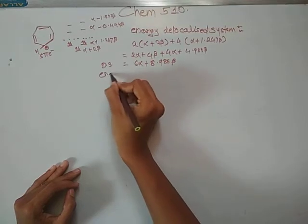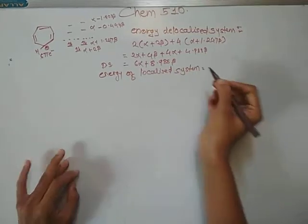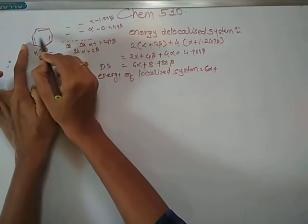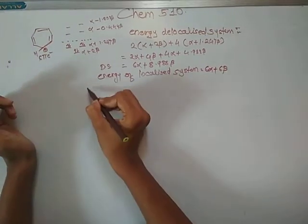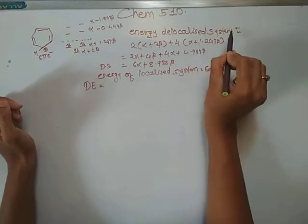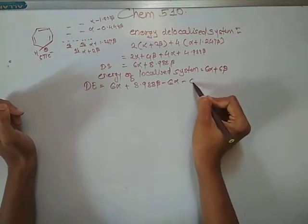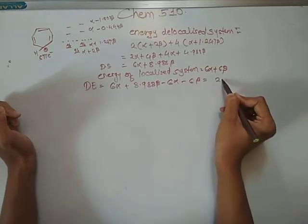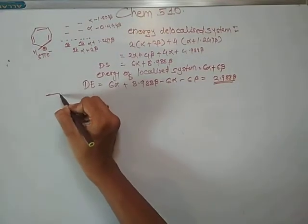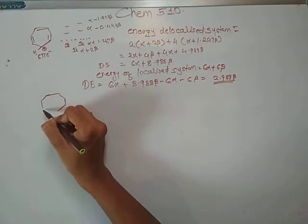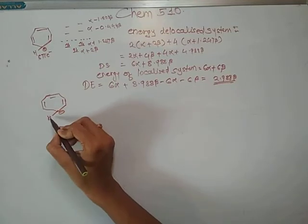The energy of the localized system for six pi electrons equals 6 alpha plus 3 double bonds, so 6 beta. The delocalization energy is: delocalized minus localized = (6 alpha + 8.988 beta) minus (6 alpha + 6 beta) = 2.988 beta. This is the delocalization energy of the cation.